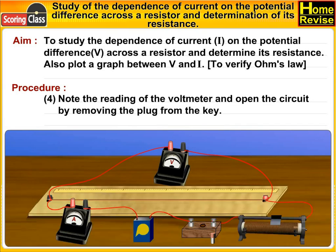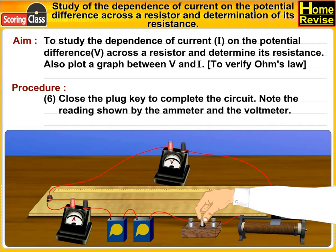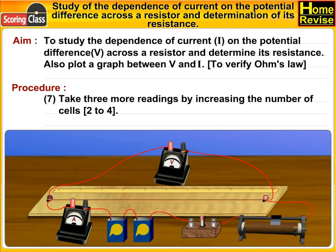In place of a single cell, connect two cells in series in the circuit to increase the potential difference. Close the plug key to complete the circuit. Note the reading shown by the ammeter and the voltmeter.